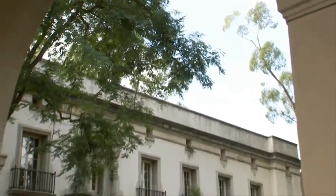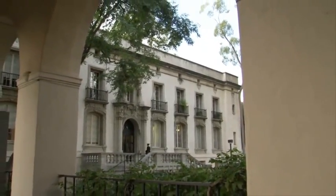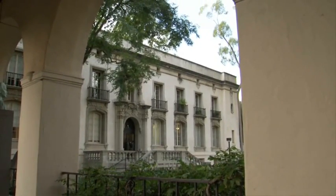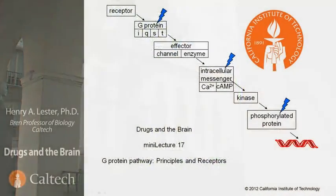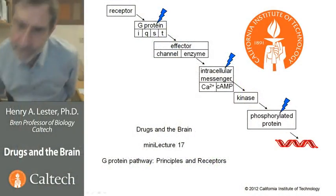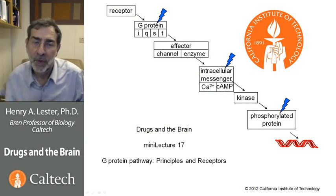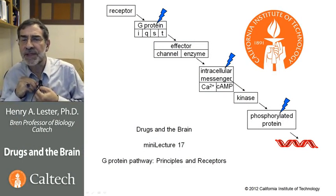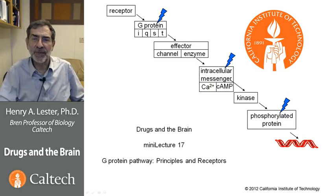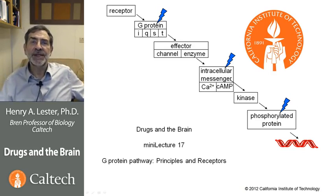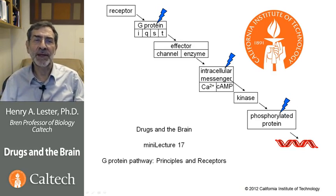This is the Parsons Gates building at Caltech. In films, it frequently appeared as the supposed office building of the hero. We're starting a series of four mini lectures on the G-protein pathway. This is an amazing and important pathway in neuroscience.